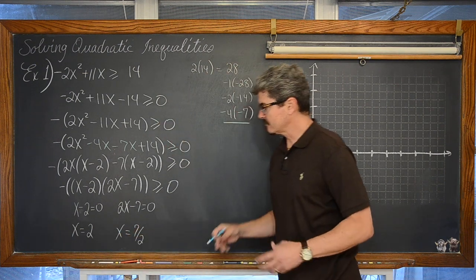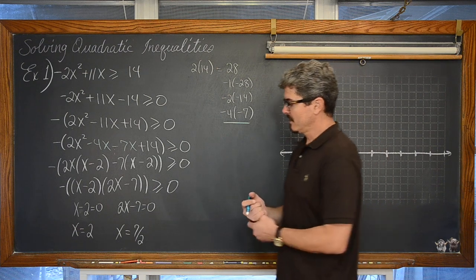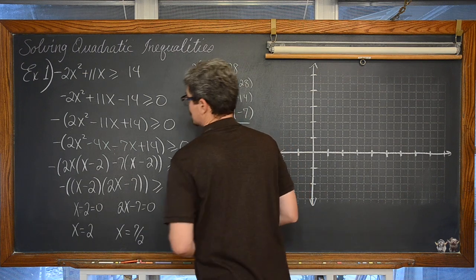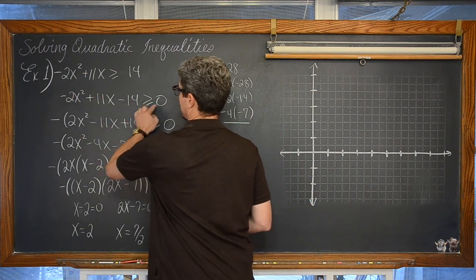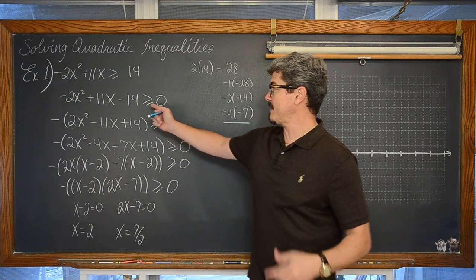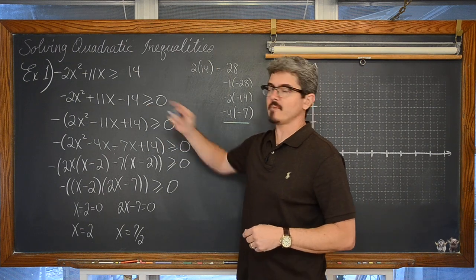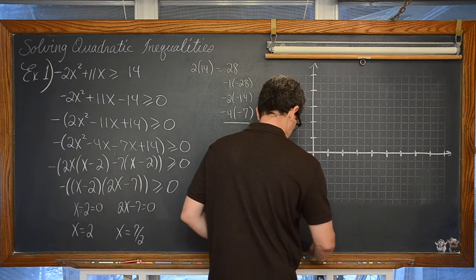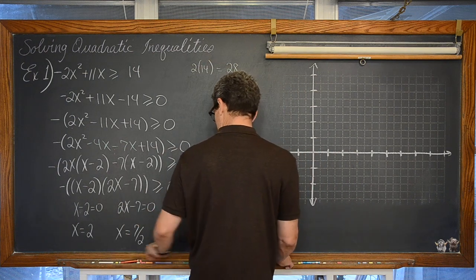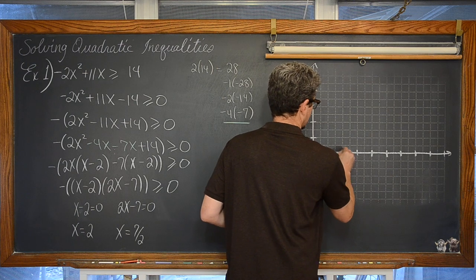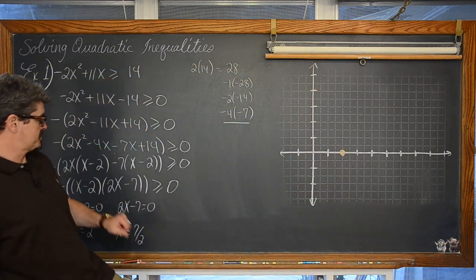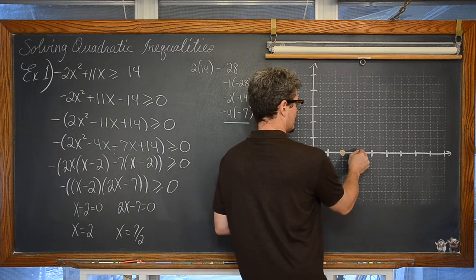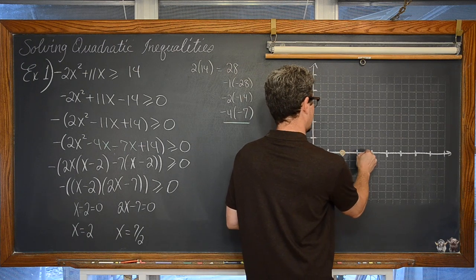Now the way of looking at this is: at the x value of 2, and at the x value of 7 halves, this quadratic is going to be equal to 0. And that happens to be part of my solution. So on a number line, our critical values are x equals 2 and x equals 7 halves, which is 3 and a half.